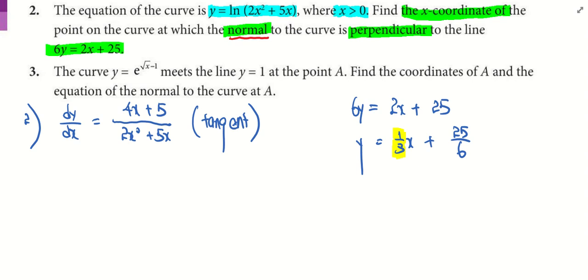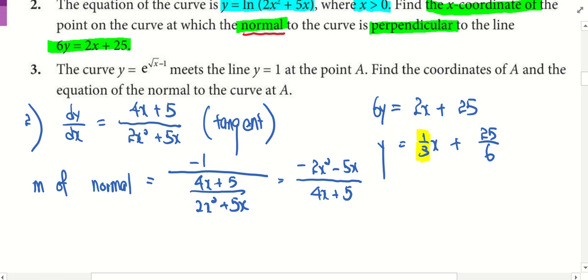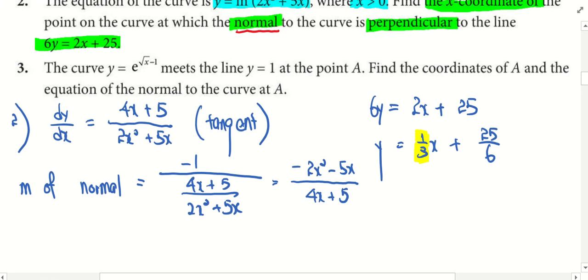We need to change the form of the line to y equals mx plus c. And it's very clear cut. You can see this is the gradient. Let's find the gradient of the normal. What we have done just now is for the gradient of the tangent, am I right? If I want the gradient of the normal, what must we do? Negative reciprocal. Let's do that now. The gradient of normal is the negative reciprocal. I flip the fraction around because it's a reciprocal, and the negative I multiply it to the numerator.